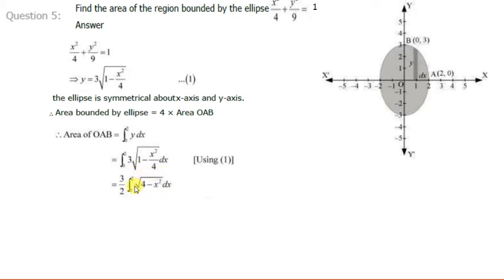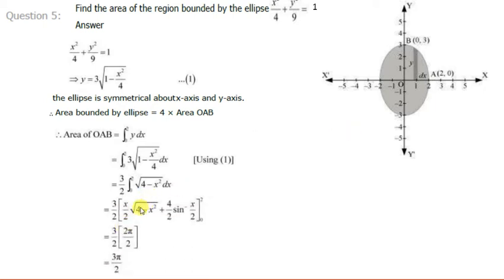Now we use the formula for the integration of √(a² − x²), which is (x/2)√(a² − x²) + (a²/2) sin⁻¹(x/a) + C. Here a² = 4, so a = 2. Applying this formula with limits from 0 to 2, we evaluate the expression at x = 2 and x = 0.